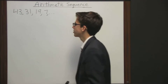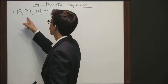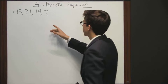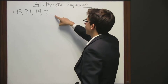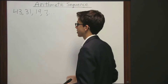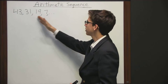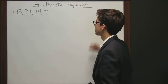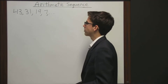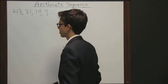Up here on the board we have a sequence of numbers: 43, 31, 19, and 7, but notice after this comma we have dot, dot, and dot, meaning there's more numbers after it. And so if we were going to continue this string of numbers, then we are going to have to figure out what the pattern here is with these numbers.